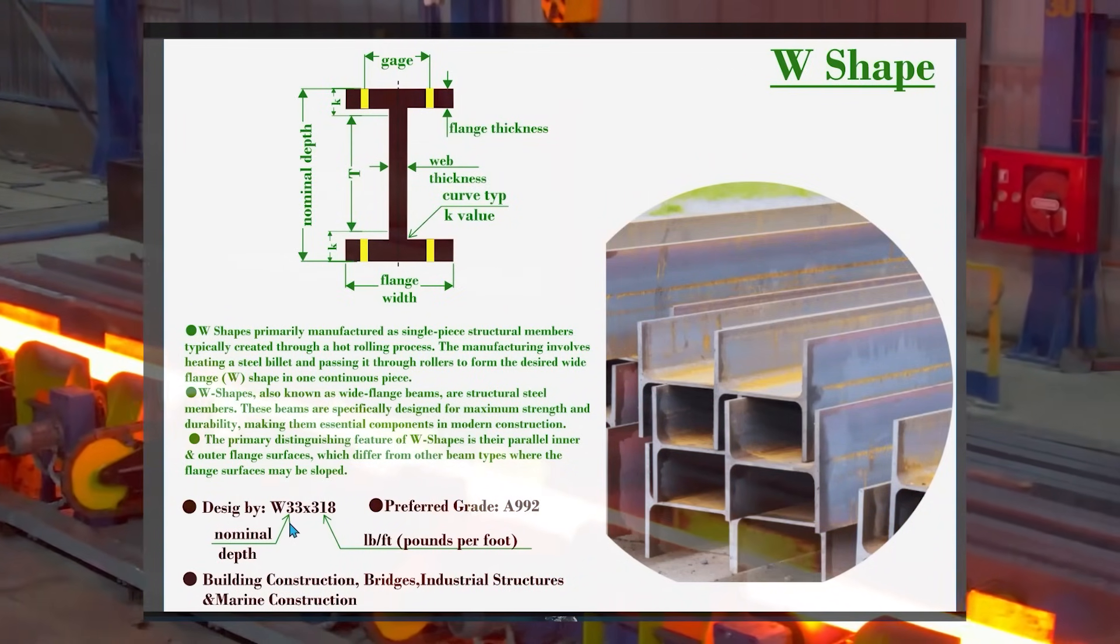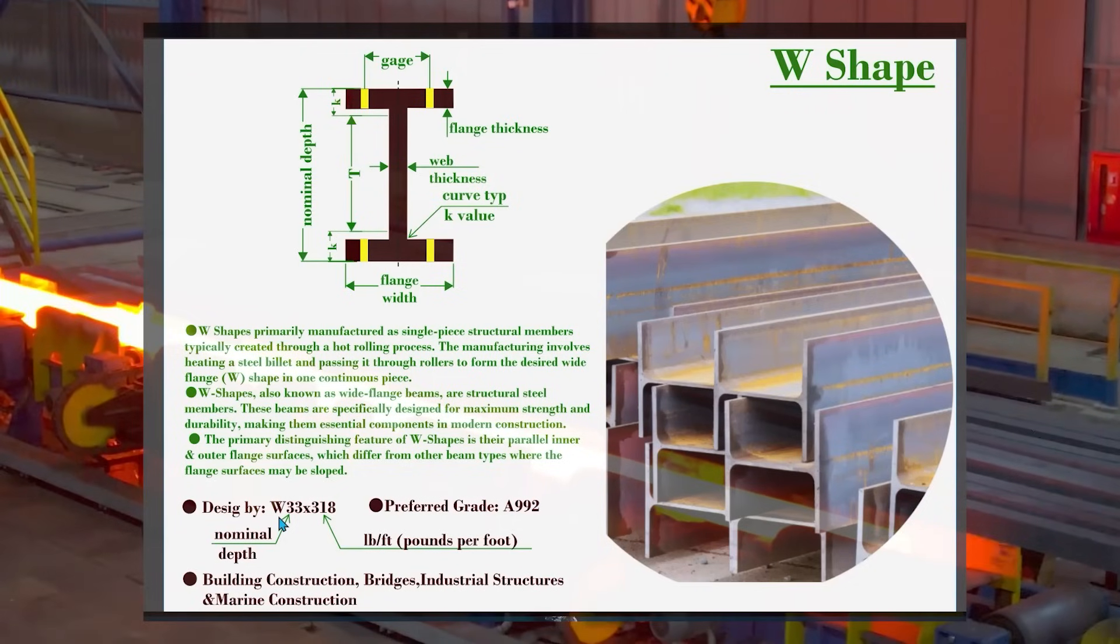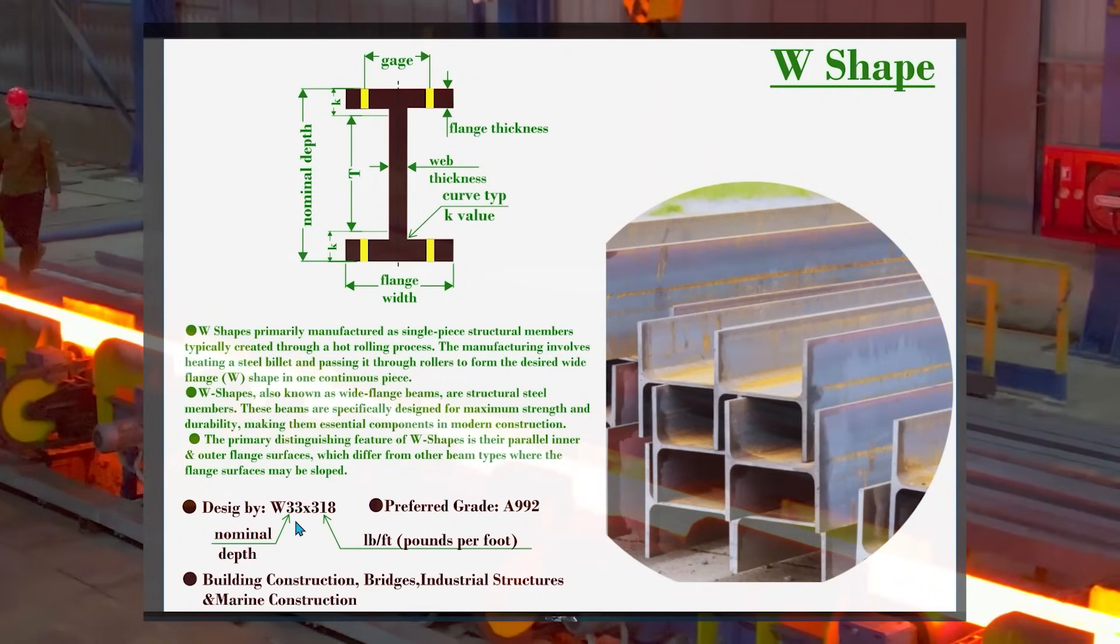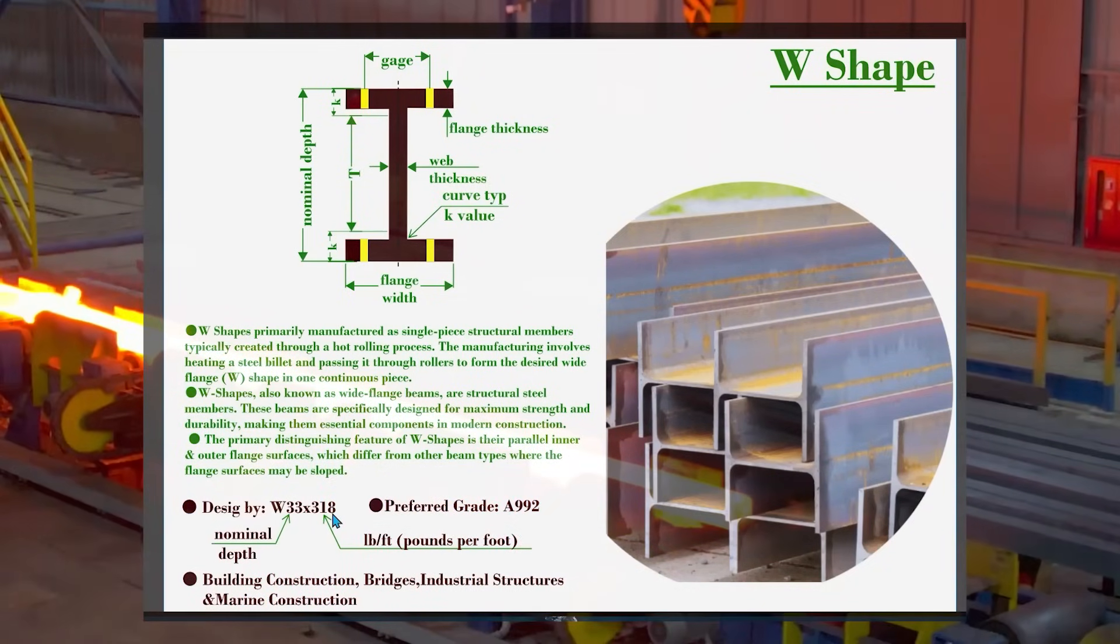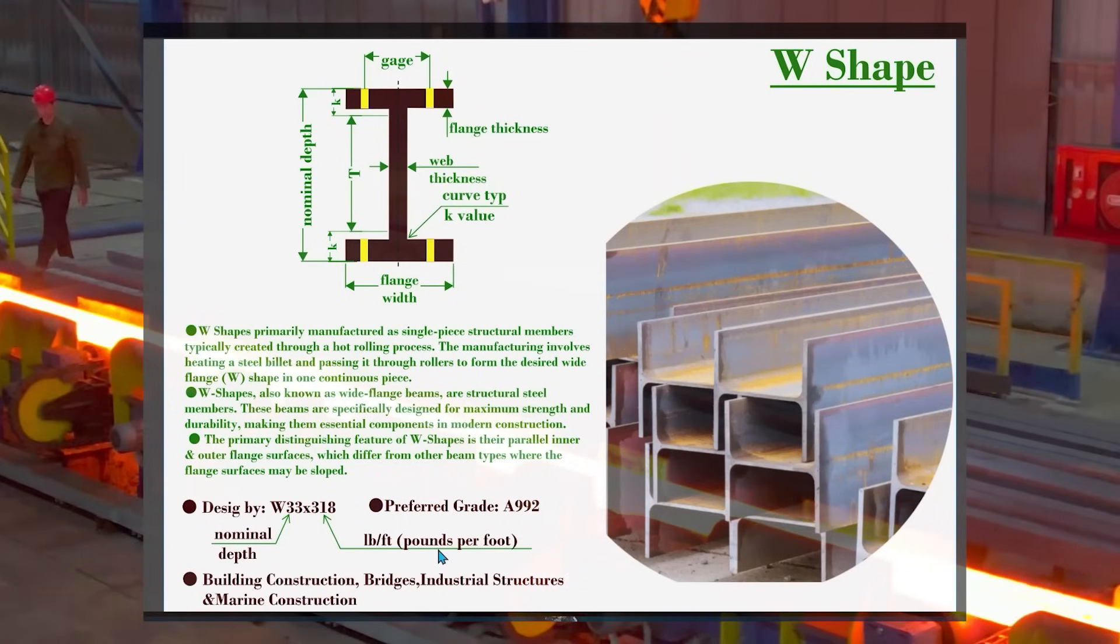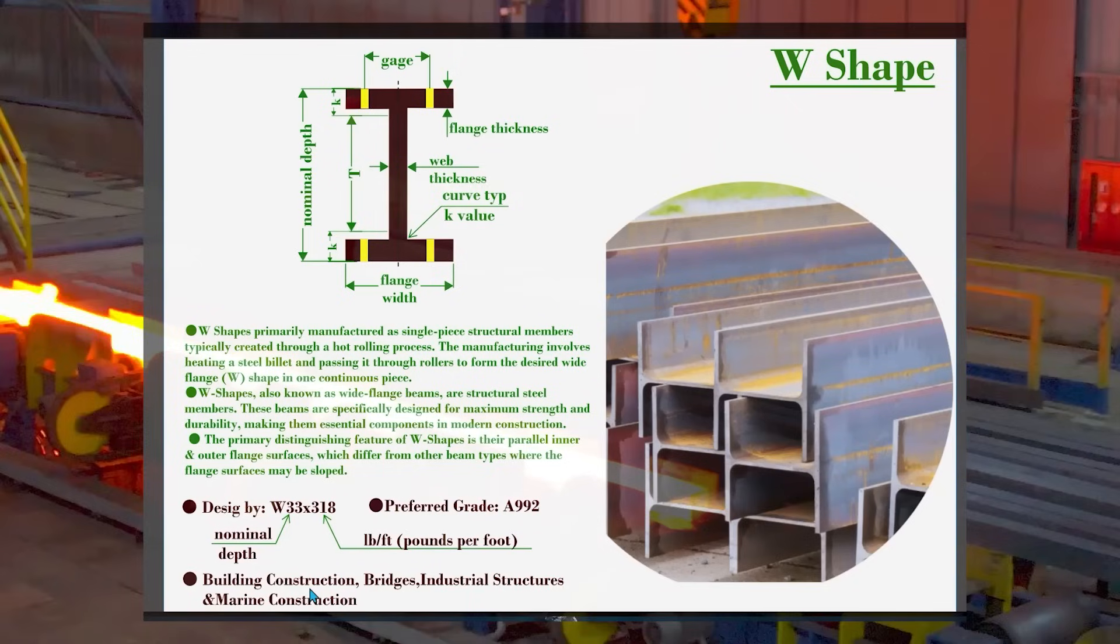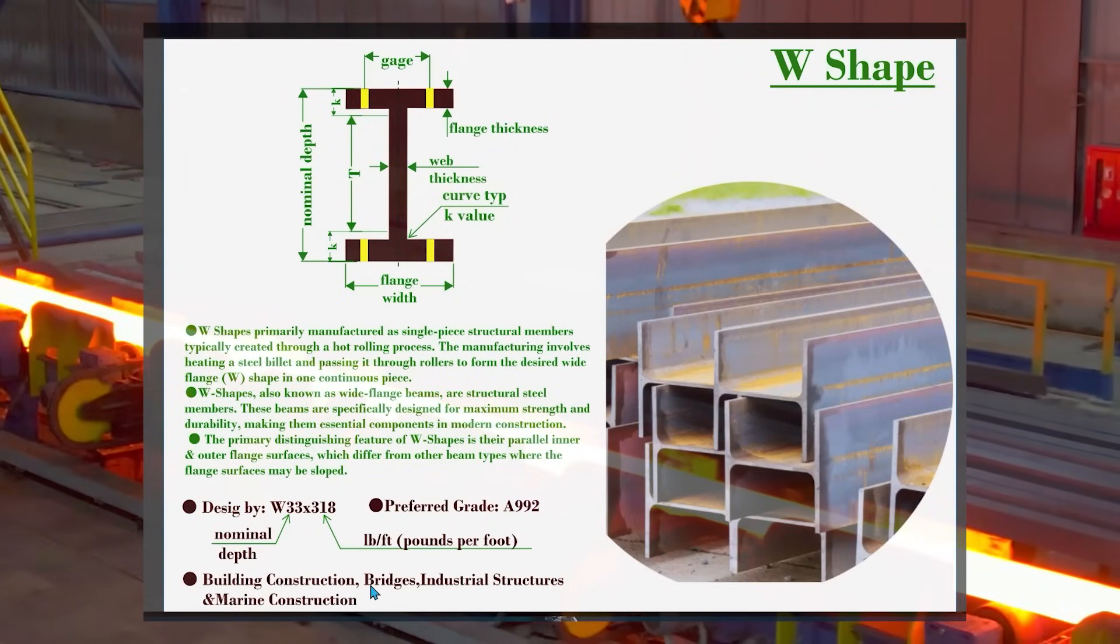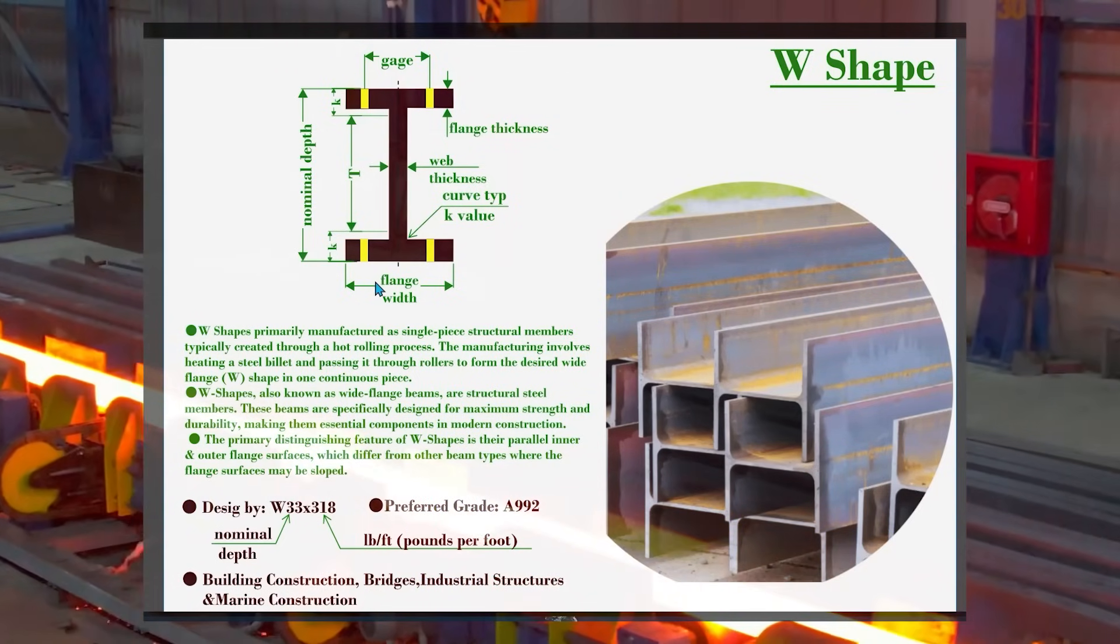There is a standard format to write the profile size. Just for example, W33 by 318. W33 is the nominal depth of the beam, and 318 is the weight in pounds per foot. These wide flange shapes are widely used in building construction, bridge, industrial structures, and in marine construction.